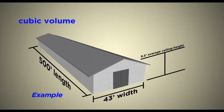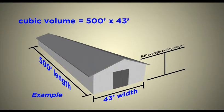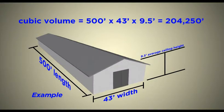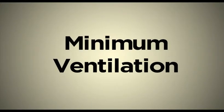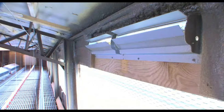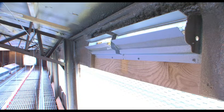To get the cubic volume of the house, we multiply the house length, 500 feet, by the house width, 43 feet, by the house average ceiling height, 9.5 feet. The cubic volume of the house in this example is 204,250 cubic feet. Now that we have the cubic volume of the house, let's discuss how to calculate the number of fans and TJP inlets needed during minimum ventilation.